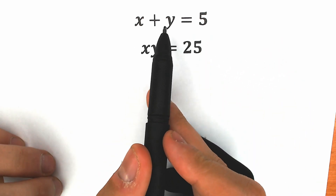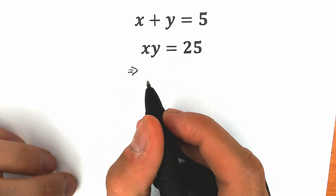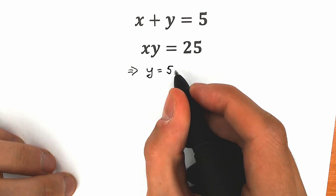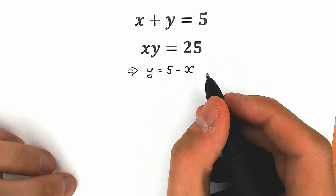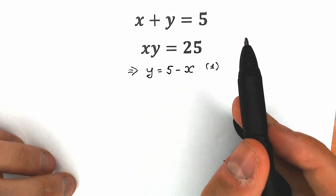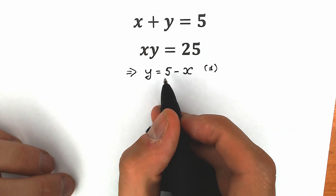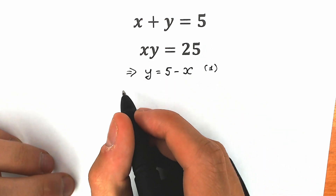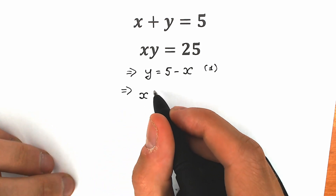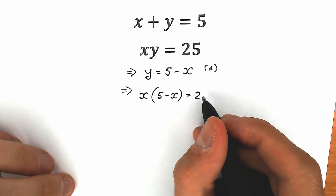First of all, from the first equation let's express our y. So from the first equation, y equals 5 minus x. Right now let's plug in this 5 minus x instead of y. So as a result, we have x times (5 minus x) equal to 25.